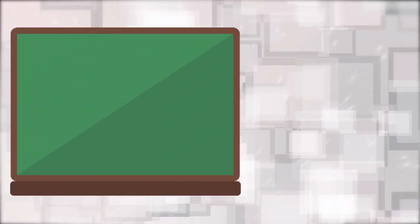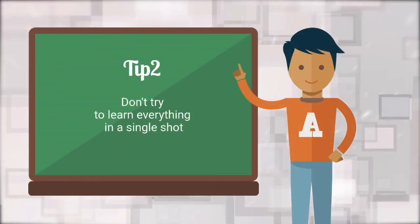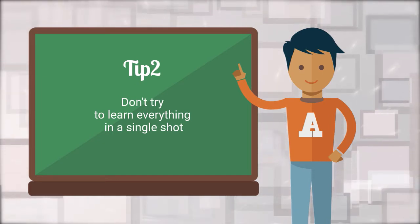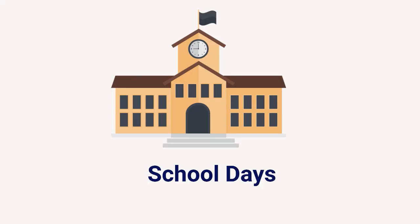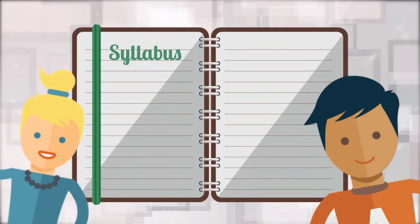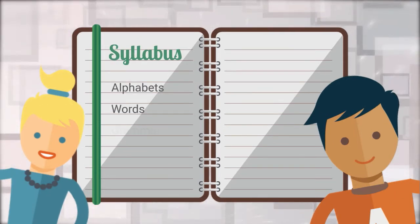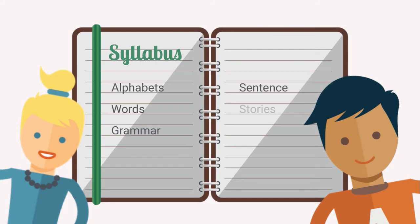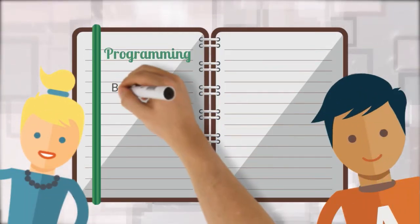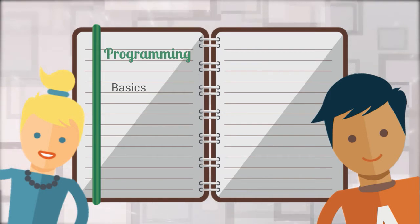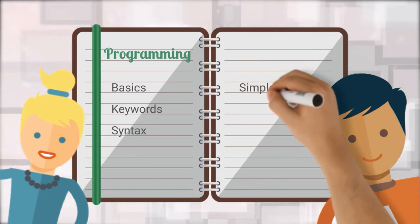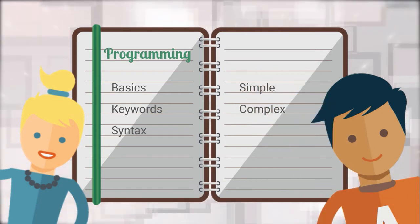The second tip that we have for you is don't try to learn everything in a single shot. Like in school days, we learn first alphabets, then words, then grammar, then sentences, and finally we're able to write stories. It's a sequential process. We can't skip any step to enter into the next step. The same thing will be applicable here. First start with basics, then terminology or keywords, then syntax or grammar, then simple programs, and then finally complex programs.